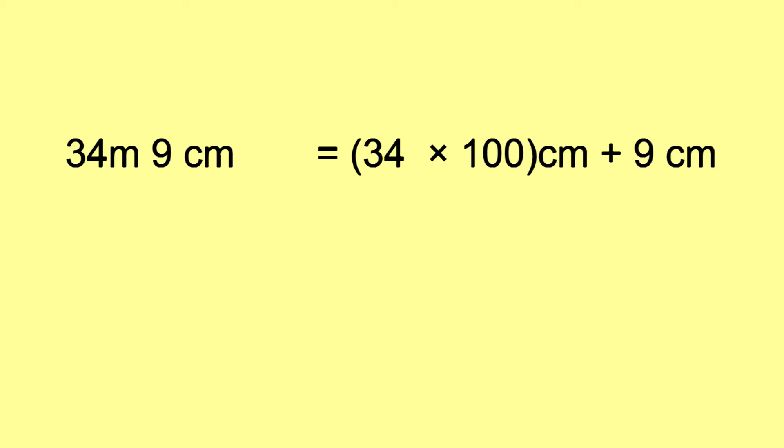34 meters and 9 centimeters is equal to 34 × 100 centimeters plus 9 centimeters, which is equal to 3400 centimeters plus 9 centimeters, giving 3409 centimeters.